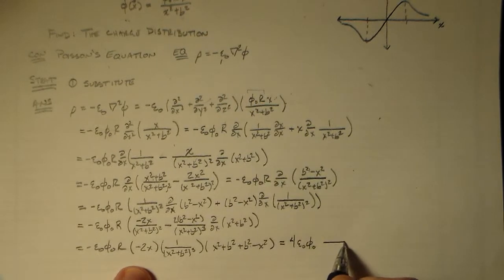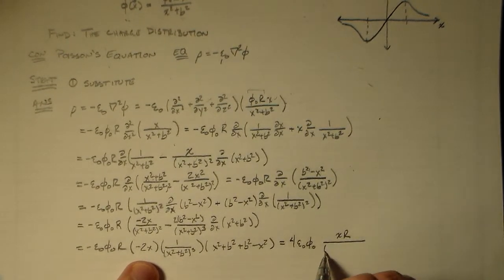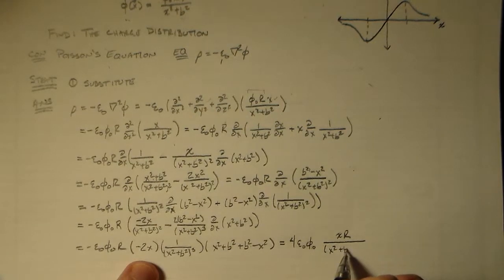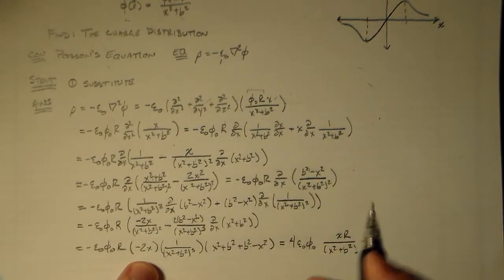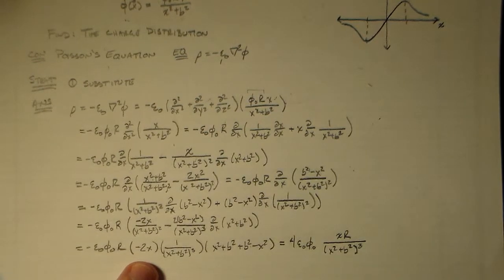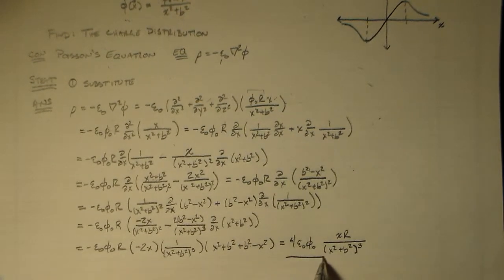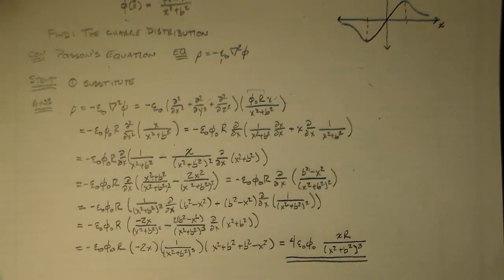We've got this minus epsilon naught phi naught r. We've actually got a 4 there because we've got this guy and this guy. So and then we've got a minus sign. So I should be taking care of those things as I go. So I have 4 epsilon naught phi naught r x, and then we have x squared plus b squared cubed. And that is more or less what our charge distribution looks like.